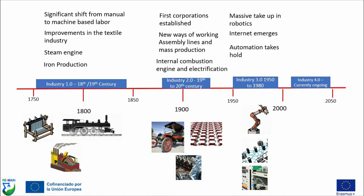That brings us into Industry 4.0, or the fourth industrial revolution, which refers to the current period we exist in right now — a period of rapid technological advancement and digital transformation in manufacturing and other industries. It is characterized by the integration of digital technologies such as the internet of things and artificial intelligence. There is mass sensorization of industry going on, trying to get as much data from manufacturing processes as possible and use this data to drive efficiency gains and improvements. There is also a drive for mass connectivity of all manufacturing assets.